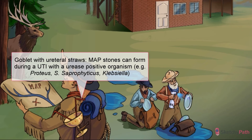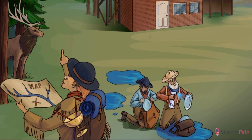The most common urease-positive culprits that cause upper UTI and trigger struvite stone formation are Proteus, Staph saprophyticus, and Klebsiella. Due to the increased incidence of UTI in women, struvite stone formation is three times more common in women, which is why a frontierswoman is featured in the sketch.